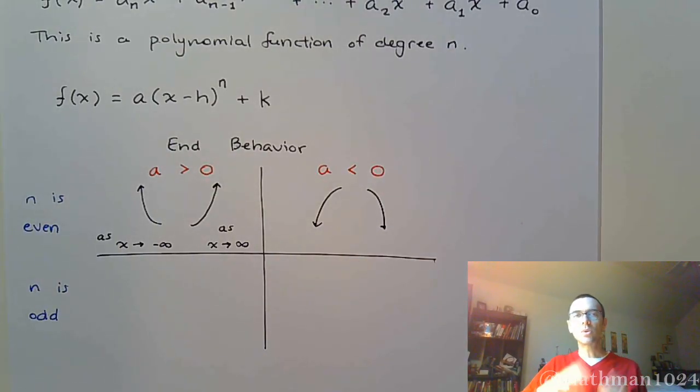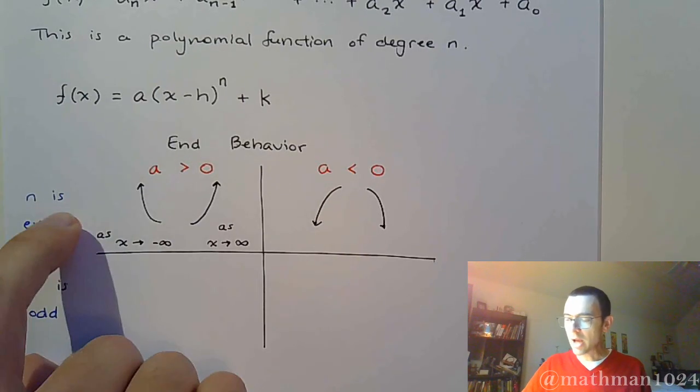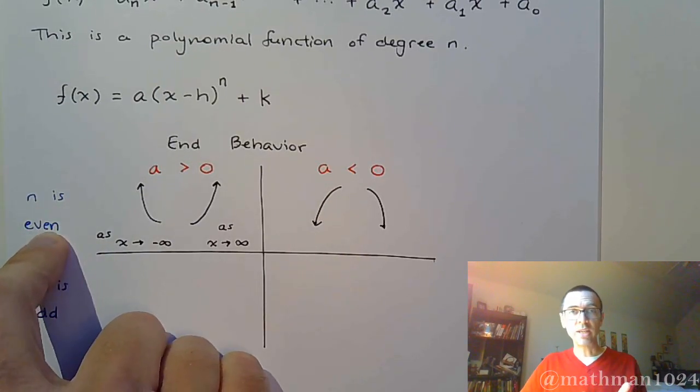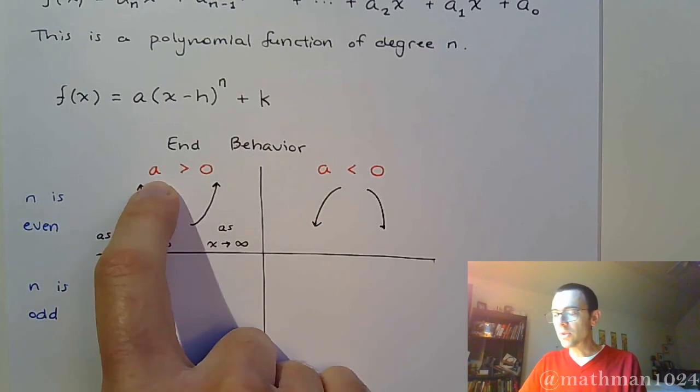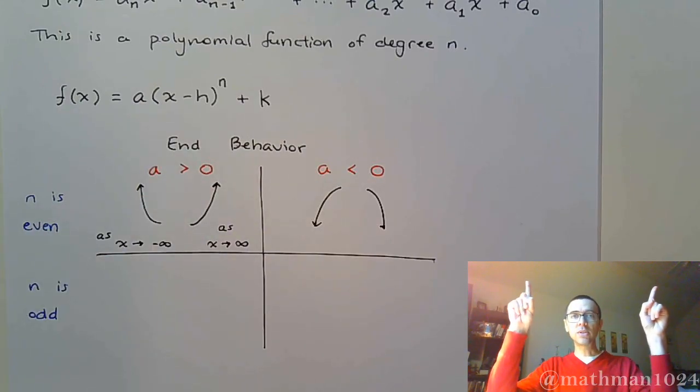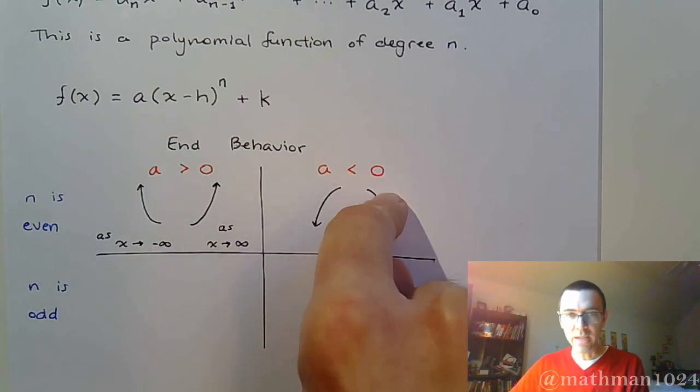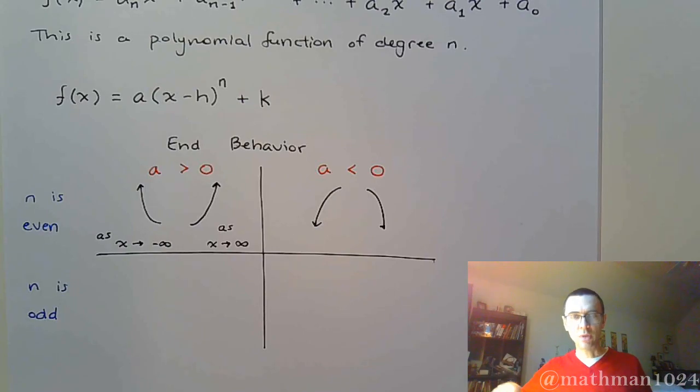So no matter what's going on in the middle, no matter how high of a power it is, as long as it's even, if the lead coefficient is positive, it's going to be going up on both ends. If the lead coefficient is negative, it's going to be going down on both ends.